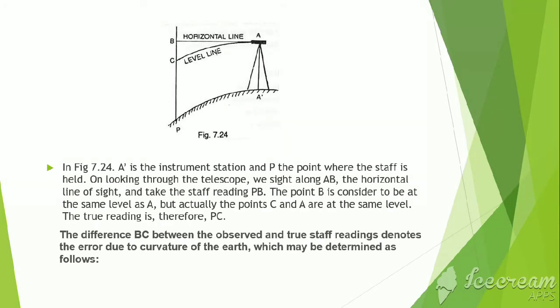In figure 7.24, A is the instrument station and P is the point where the staff is held. On looking through the telescope, we sight along FB, the horizontal line of sight, and take the staff reading PB. The point B is considered to be at the same level as A, but actually the point C and A are at the same level. The true reading is PC. The difference BC between observed and true staff readings denotes the error due to curvature, which may be determined as follows.